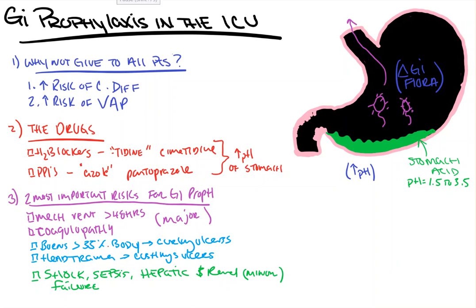Standard dosing for GI prophylaxis is 40 milligrams of pantoprazole daily, or in the case of histamine blockers, 20 milligrams every 12 hours, or twice a day.